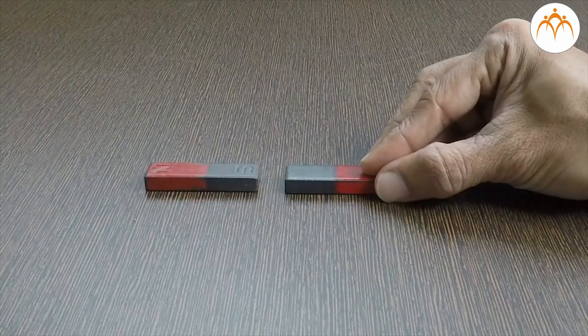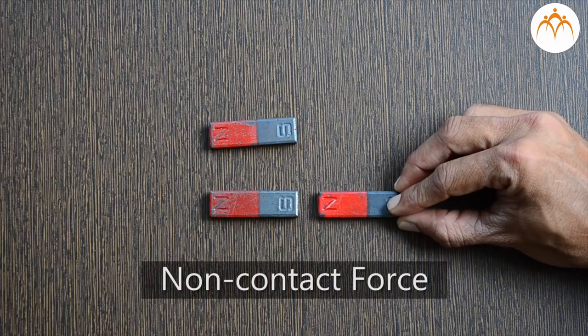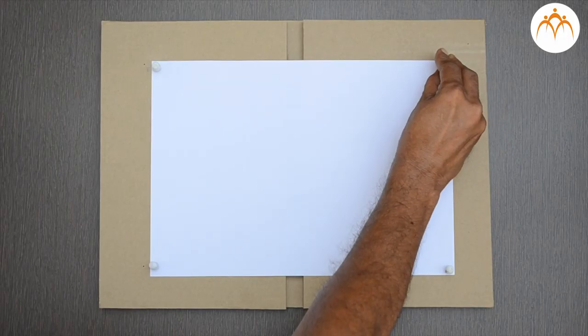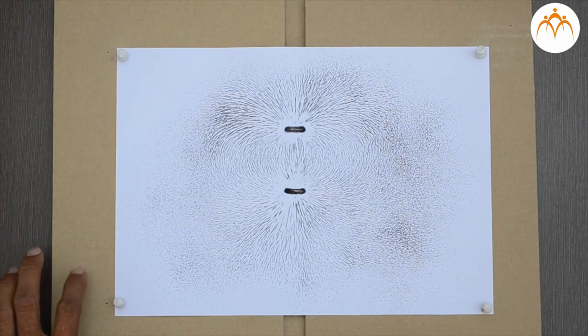All magnets have some force which is not visible. This force is called non-contact force. But with the help of iron filings, we can visualize it. We will do this later.